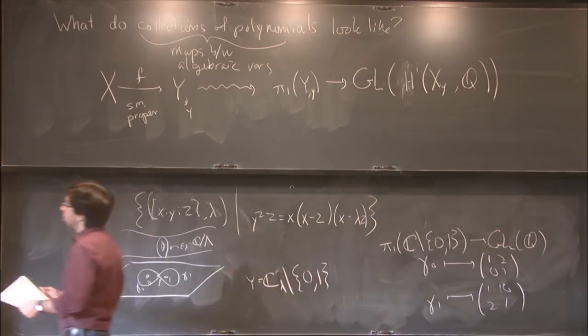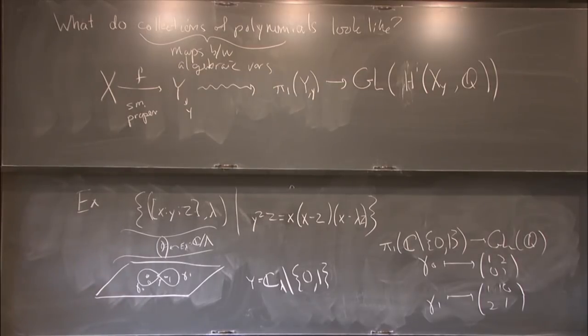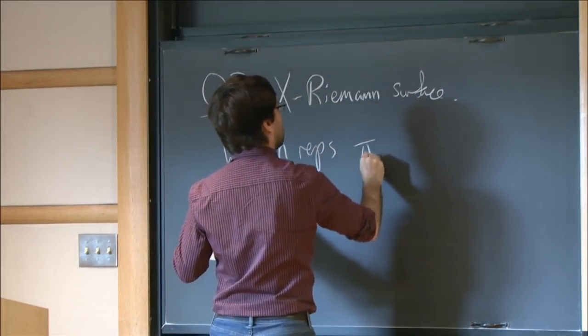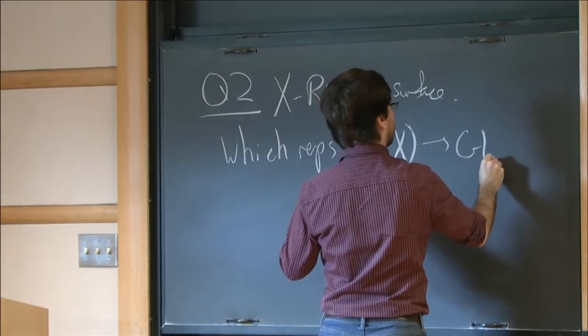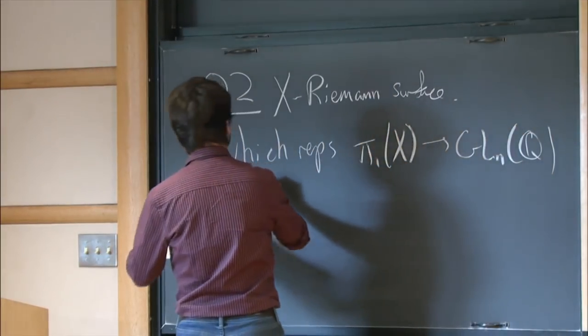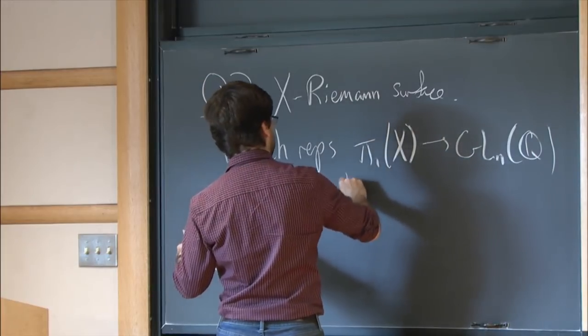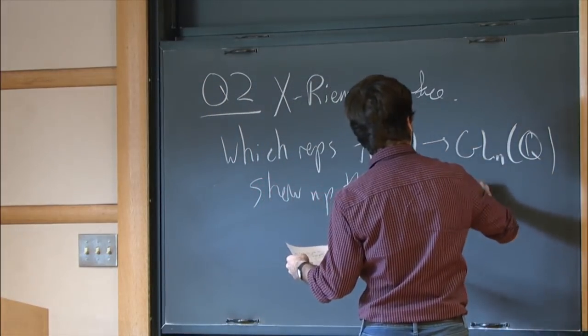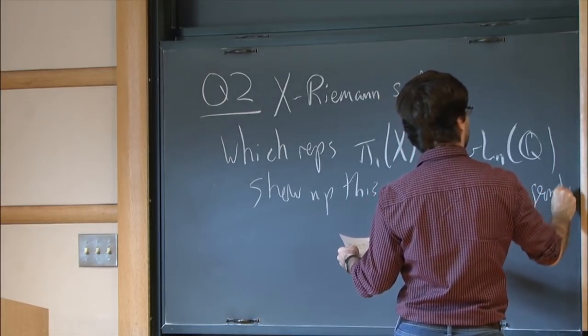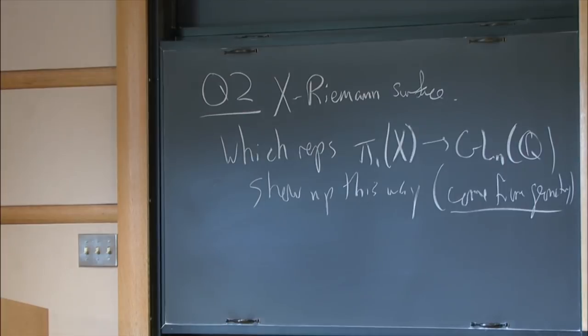So the real question I ask when I ask what do collections of polynomials look like is the following question, which is fix a Riemann surface x. Which representations of the fundamental group of x into GL_n(Q) come from geometry? To be a little bit more precise, comes from geometry means there's a smooth proper map like this and a representation, so that my given representation shows up inside of that. So it shows up as a subquotient.